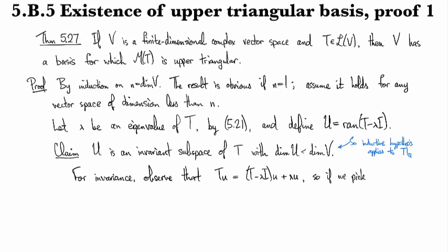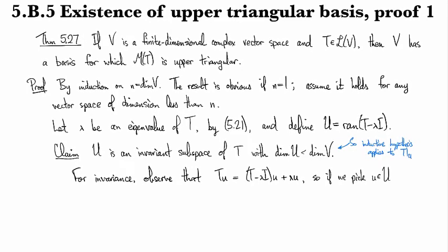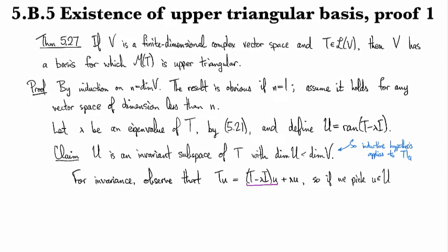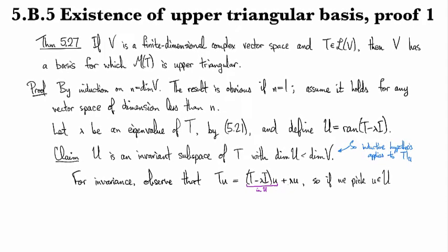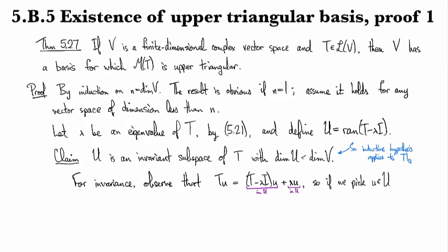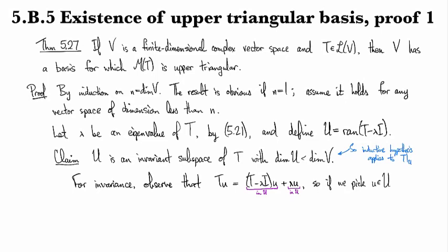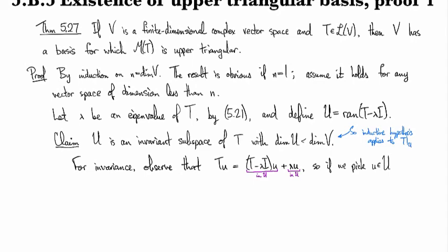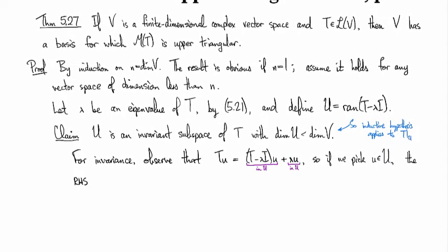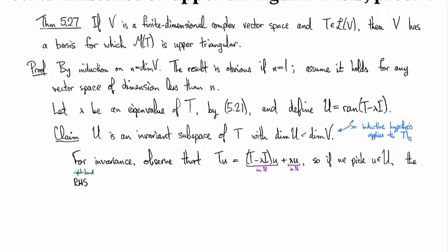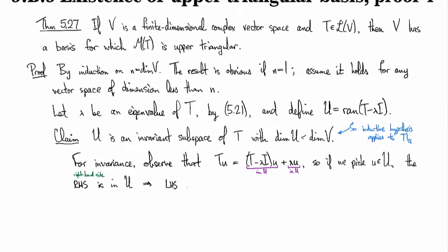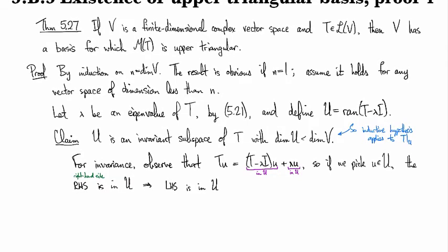And so in particular, if we do this for an element of our space U here, then you notice that this is in the range of T minus lambda I, so this one is in U. And then this is a scalar multiple of something in U, so this one is in U. And then U is a subspace. We prove that the range of anything is always a subspace. So that tells you then by closure that the guy on the left has to also be in U. So the right hand side is in U, which implies that the left hand side is in U. Okay, so that gets us invariance.